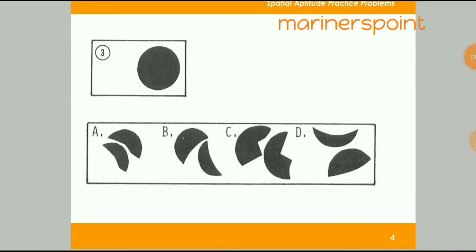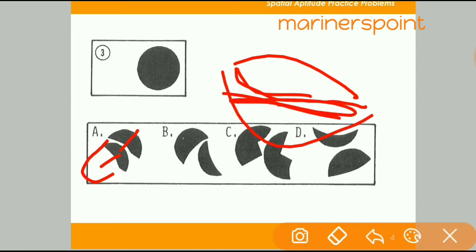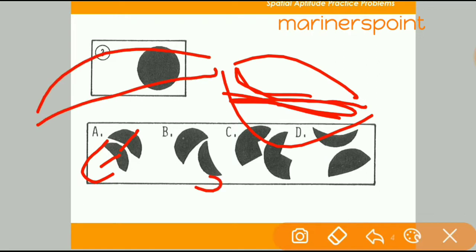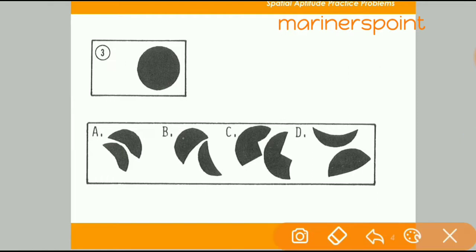In the third question, we have to complete a circle. When we try to fill option A, there will be some gap because both parts are oriented downward. When we try option B and rotate it, there is again a small gap in both figures. So options A and B leave gaps after rotation and do not fit properly.